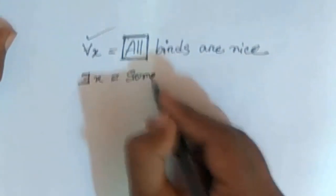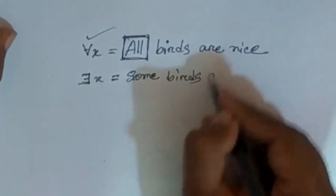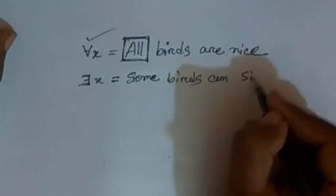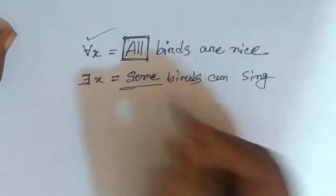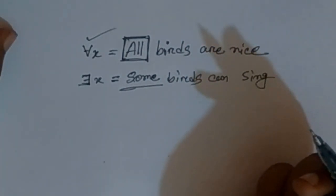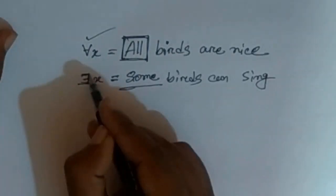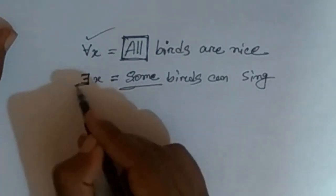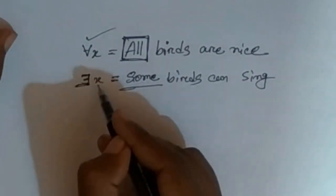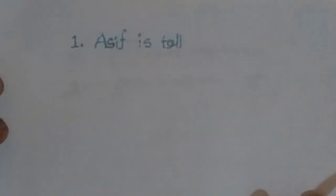The existential quantifier covers statements like 'Some birds can sing.' This means there exists at least one element for which the statement is true.